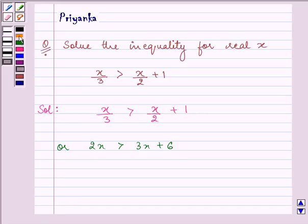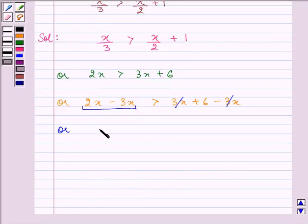Now on subtracting 3x from both the side, we have 2x minus 3x is greater than 3x plus 6 minus 3x. On solving, we have minus x is greater than 6.